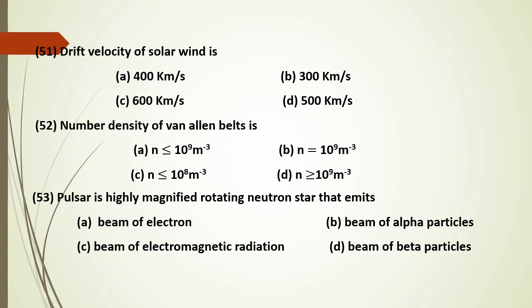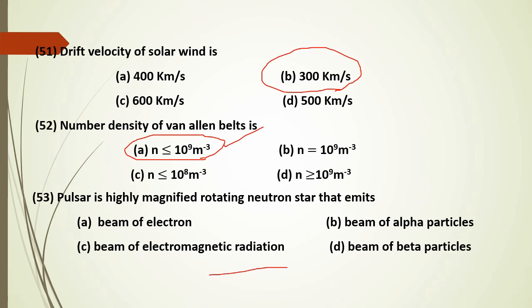The solar wind speed is about 300 km/s from the Sun. The number density of solar wind gas is less than or equal to 10^9 particles per cubic meter. A pulsar is a highly magnetized rotating neutron star that emits electrons and particles.